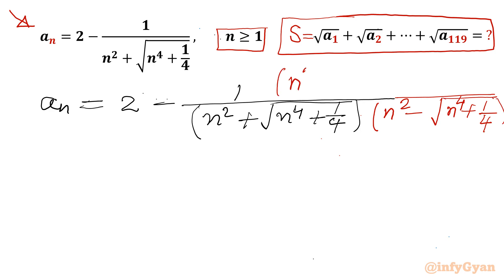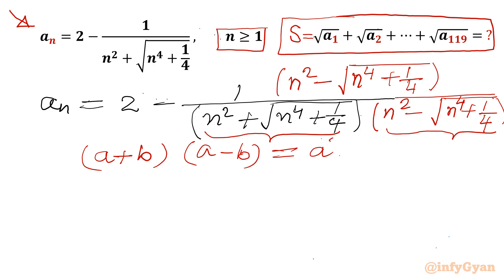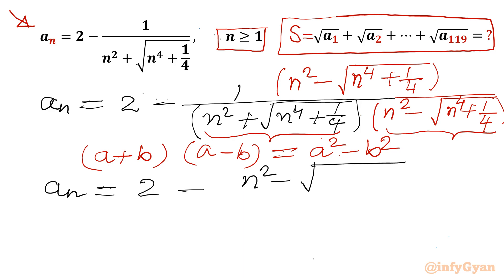So in the numerator we have n² minus square root of n⁴ plus 1/4. In the denominator this is (a + b), and we multiply by (a − b), so we can use the identity (a + b)(a − b) = a² − b². Applying this, aₙ becomes 2 minus, with numerator n² minus square root of n⁴ plus 1/4.